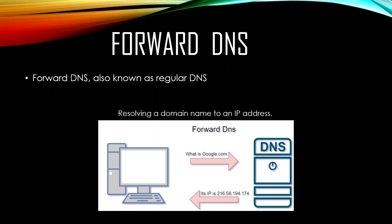So the first time you go out to google.com on the internet, you do not know the IP address of google.com, so you have to send a DNS query to your DNS server, as shown here in the drawing. You request what google.com's IP address is, and then your DNS server responds with the IP address of google.com.